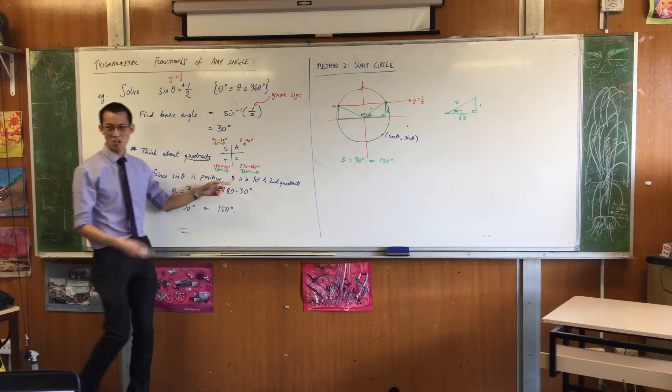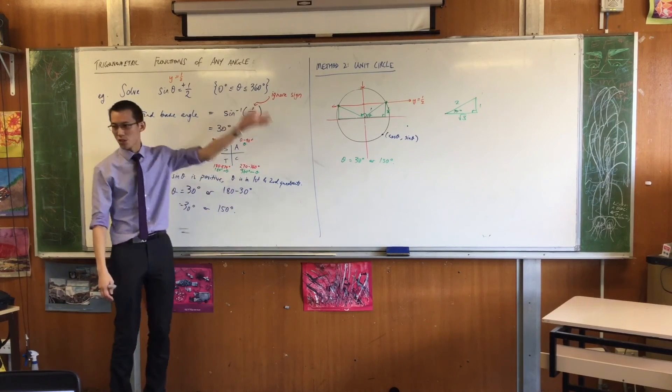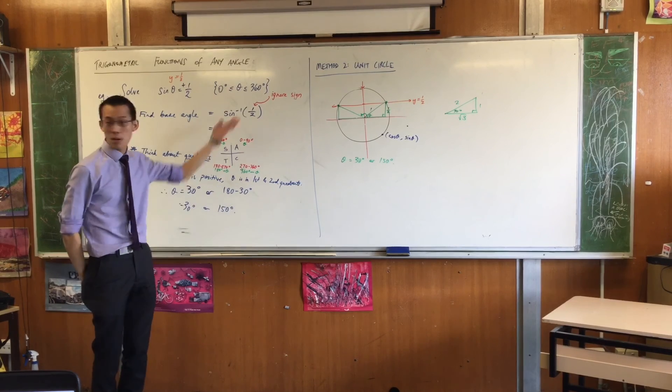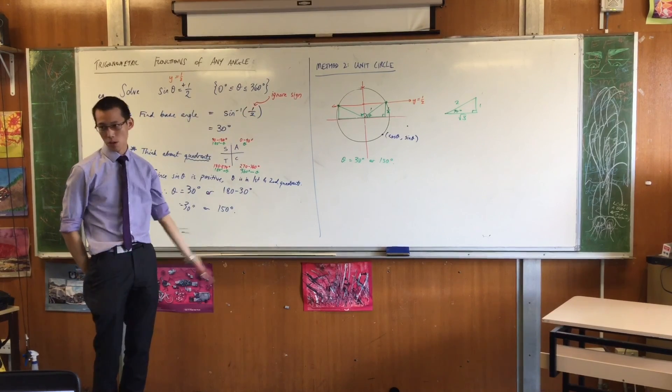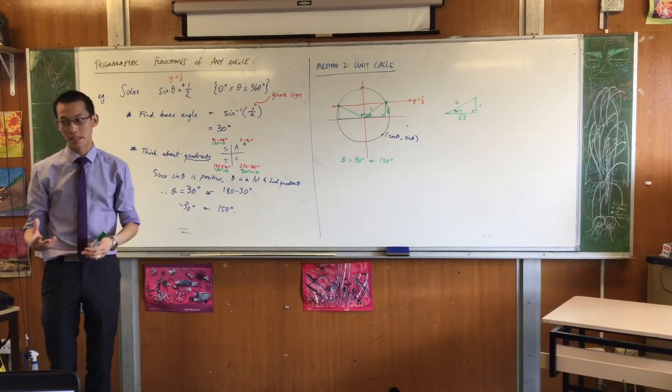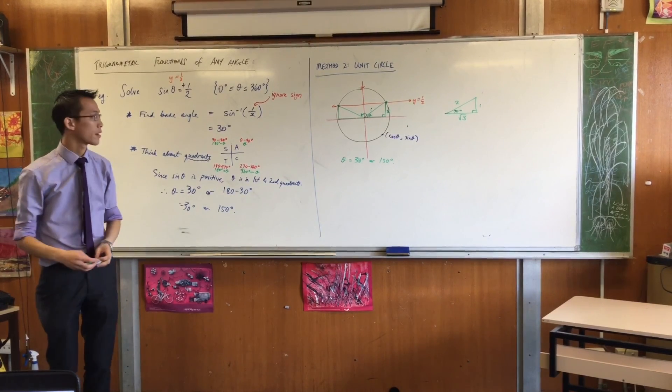You don't think about any ASTC business. You don't have to worry about, oh, am I positive or am I negative? The unit circle just kind of does the work for you. Okay? So that was method two. And I think you can agree, there's much less working, but you have to think a little bit harder. That thinking develops understanding, which is understanding you need anywhere. Okay? Thank you.